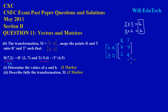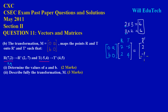Since the matrix maps each object point onto its corresponding image point, multiplying the matrix by the object points must give the image points. So I equate the product to the matrix of image points: R prime [2; -7] in the first column and T prime [4; 5] in the second column. This gives us a 2×2 matrix equation.